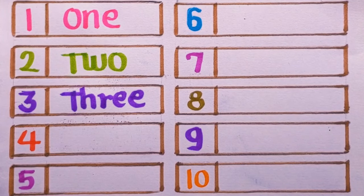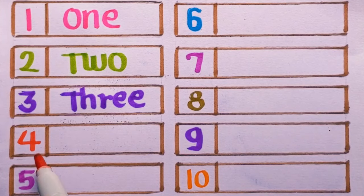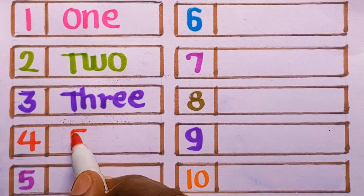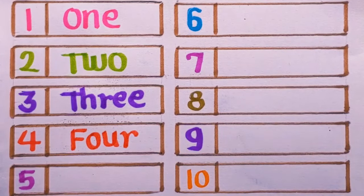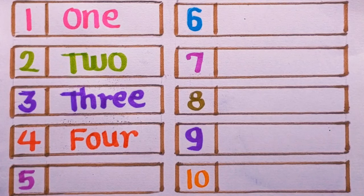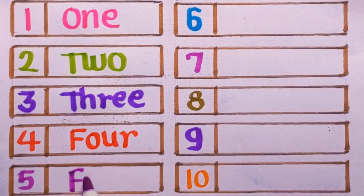After number three, next is number four: F-O-U-R, four, red color. Next is number five: F-